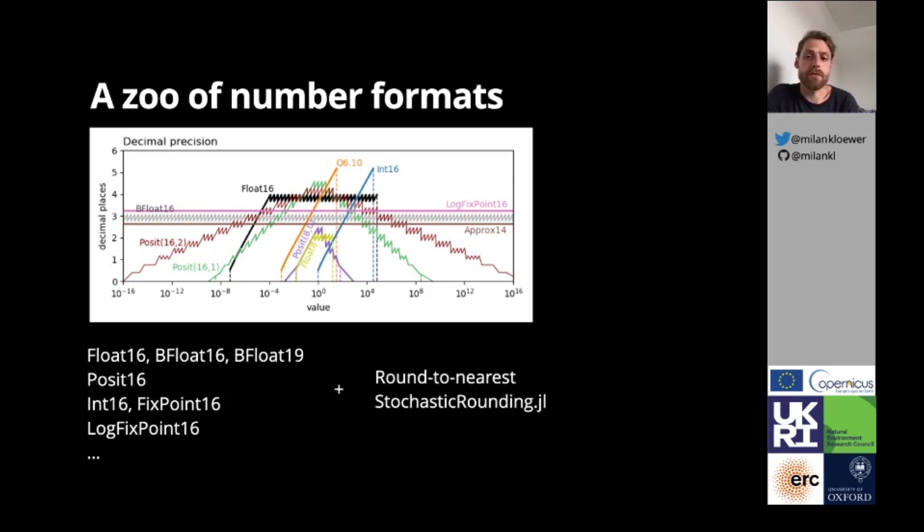The precision of the various formats is here visualized in terms of the decimal places that are at least correct after rounding. Floats are basically a flat line on this graph, as the exponent bits are evenly distributed in log space. Note the logarithmic x-axis. The little spikes result as the significant bits are, in contrast, evenly distributed in linear space.